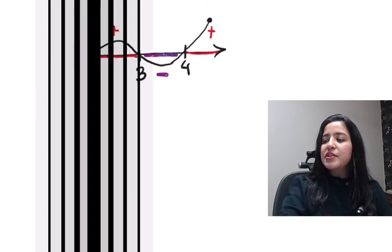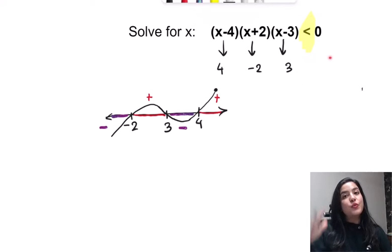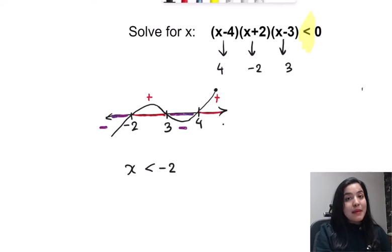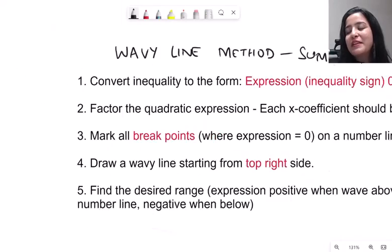But what do I want in my question? I want less than zero. That means I want the region where my wave is below the number line. So I just saw where that is. That's here one place and here second place. Using this, I'm just going to write my final answer. Everything less than minus two and everything between three and four. I am done. Just see how easy this was. It looked crazy. I agree. First time I saw this, I was also pretty intimidated by this. But now onwards, I hope this is not going to scare you at all.